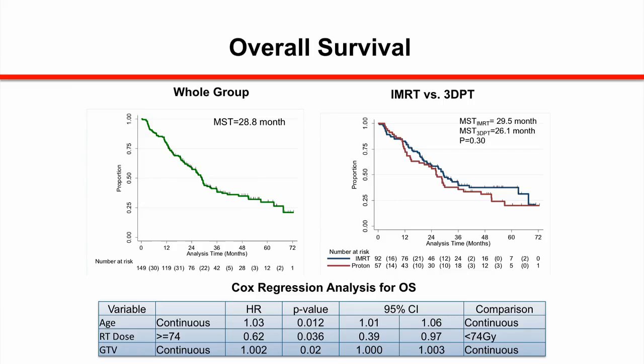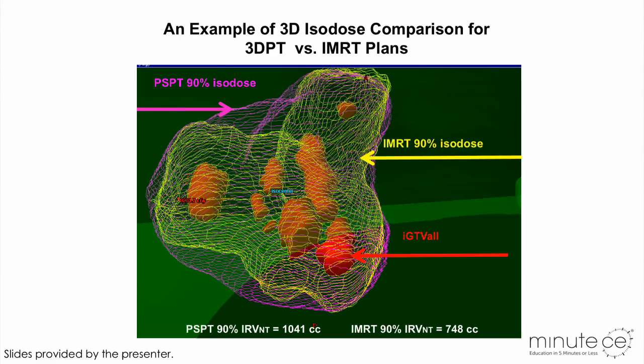Overall survival was actually excellent. Because we included patients with stage 4 and recurrent disease, the overall median survival time was 28.8 months and 29.5 months, and 26.1 months after IMRT versus 3D conformal proton, respectively. There was no difference between the arms. This is comparable with published data from RTOG 617. We also did a similar as-treated analysis and the findings were quite similar, with overall survival maintained at 28.3 and 29 months.